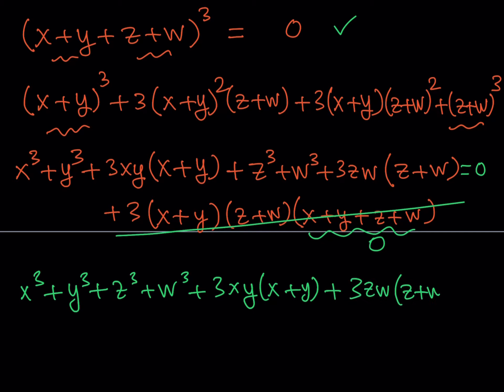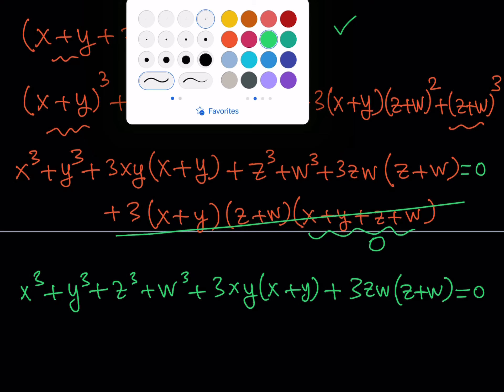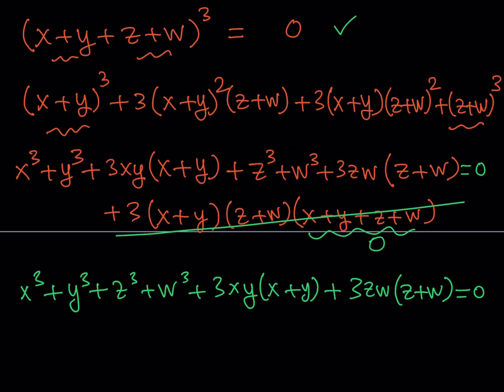They seem to have a common factor of three, but there's more than that because we have another identity we can use. Because x plus y plus z plus w is equal to zero, I can replace x plus y with the opposite of z plus w. They add up to zero, so they're opposites.